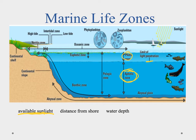Photosynthesis can occur in the photic zone, and that's where we see phytoplankton. As light penetrates through the ocean it gets absorbed, scattered, and refracted, which is why there's a limit to light penetration. The surface waters are generally called the euphotic zone, and this is where we see the bulk of photosynthesis occurring in the ocean.